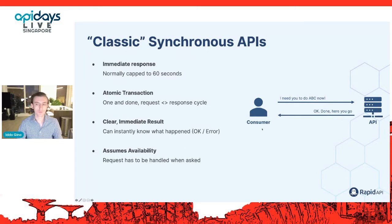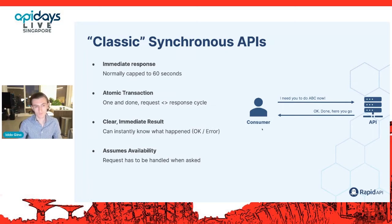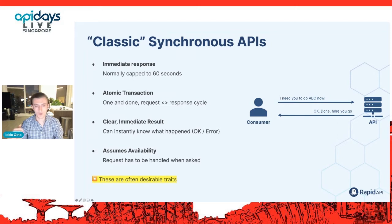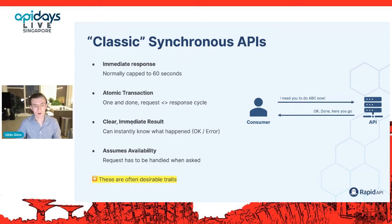A lot of literature around asynchronous APIs kind of villainizes these synchronous traits, but in many cases they're actually desirable. Think about opening Twitter on your phone — you want the feed immediately, you want a clear result, and you assume Twitter can give you that data. So those traits are often desirable, and asynchronous APIs are really about the subset of cases when they're not. The biggest question to ask before going async is: is that really the right use case?